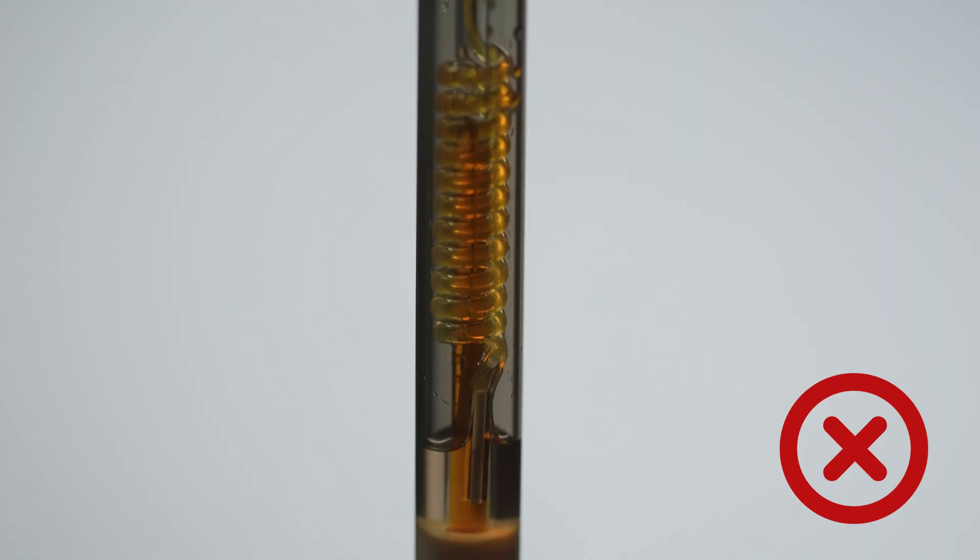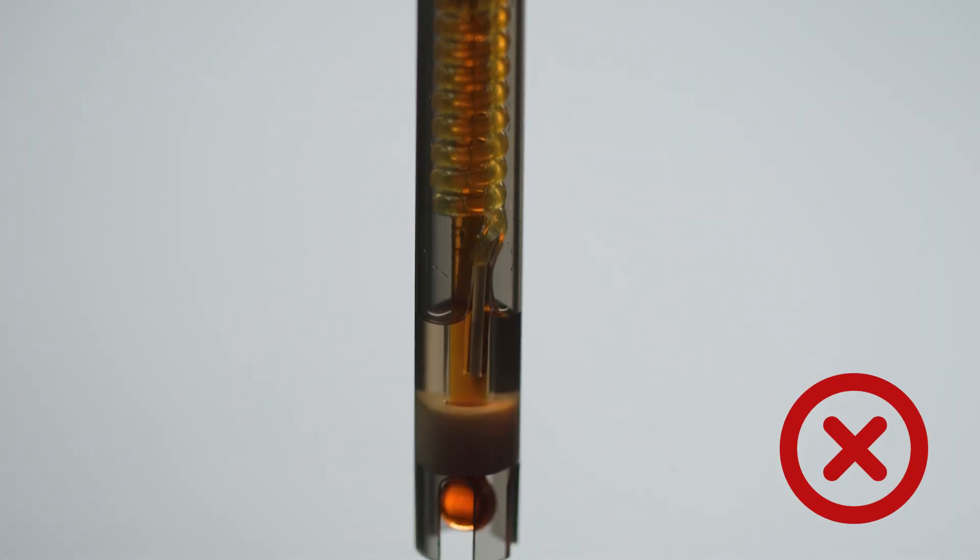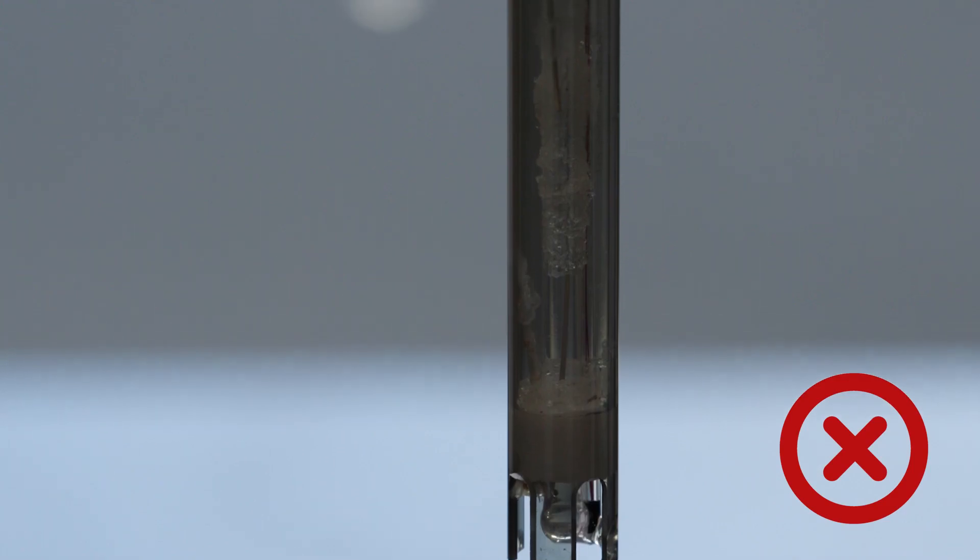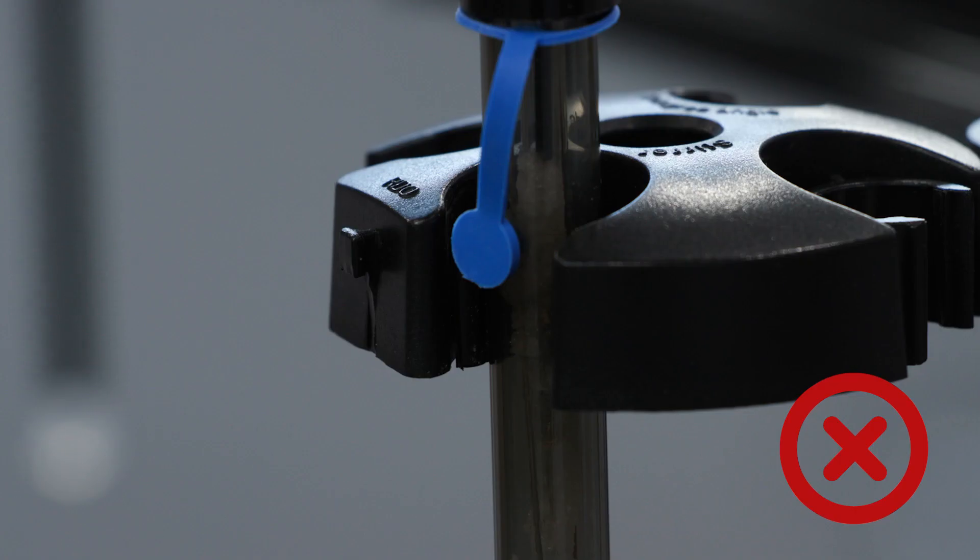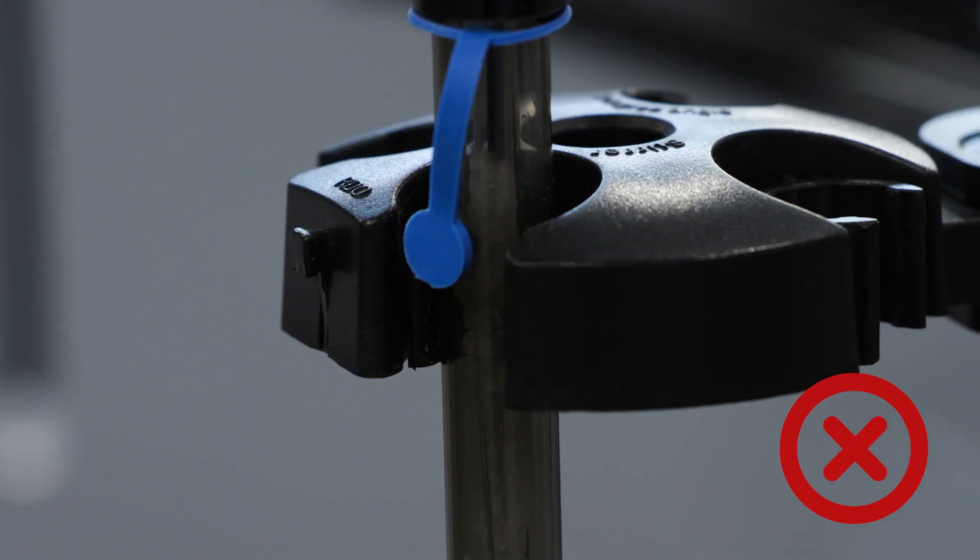Not maintaining the fill solution on refillable electrodes can lead to a variety of issues. There are a number of items to look out for, such as low level of electrolyte fill solution, old crystallized or discolored fill solution, or the fill hole left closed during testing.